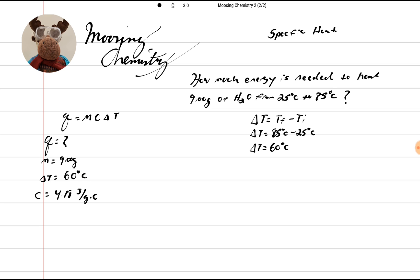Now we're ready to solve the problem. It's pretty simple. So Q equals 9.00 grams times our specific heat was 4.18 joules per grams times Celsius times our temperature, which is 60 degrees C. So our Celsius cancels out and our grams cancel out, leaving only the joules left over, and Q is going to equal 2,257 joules.